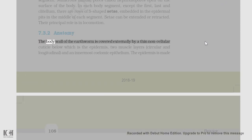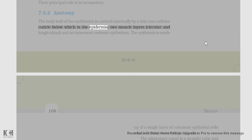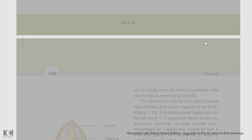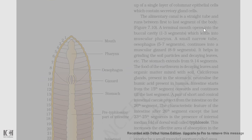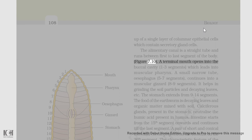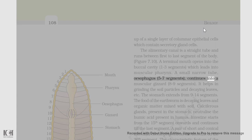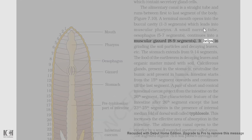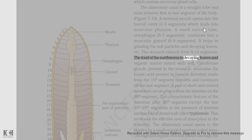The body wall of the earthworm is covered externally by a thin noncellular cuticle, below which is the epidermis, two muscle layers (circular and longitudinal), and an innermost coelomic epithelium. The epidermis is made up of a single layer of columnar epithelial cells which contain secretory gland cells. The alimentary canal is a straight tube and runs between the first to last segment of the body (figure 7.10). A terminal mouth opens into the buccal cavity (1-3 segments), which leads into a muscular pharynx. A small narrow tube, the esophagus (5-7 segments), continues into a muscular gizzard (8-9 segments). It helps in grinding the soil particles and decaying leaves. The stomach extends from segments 9 to 14.